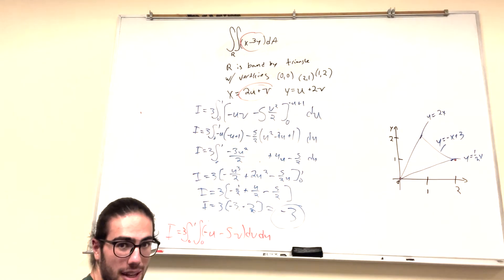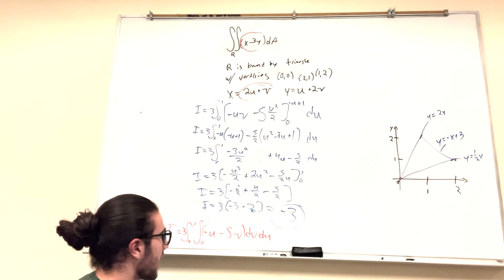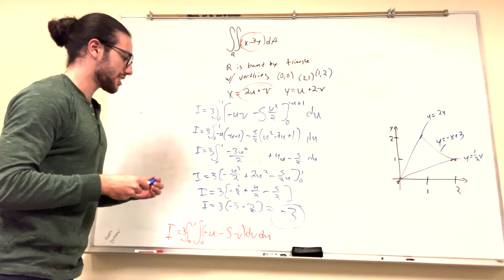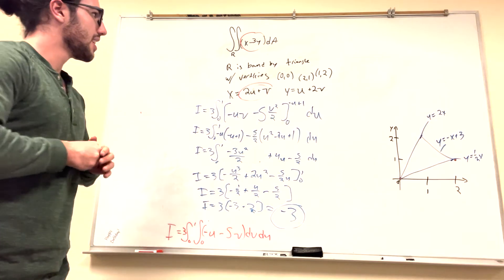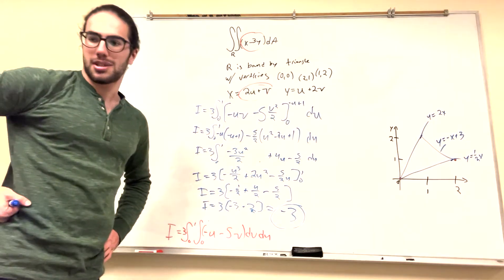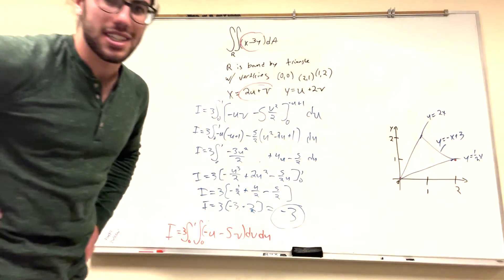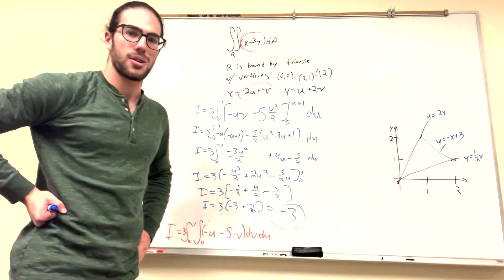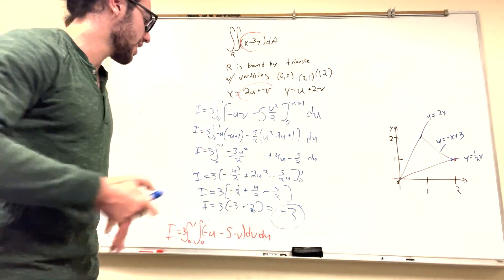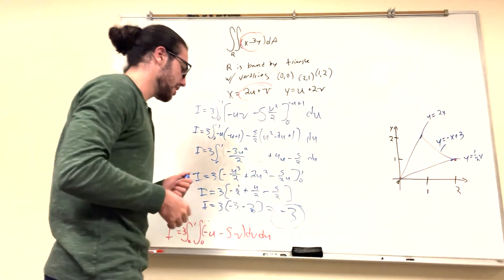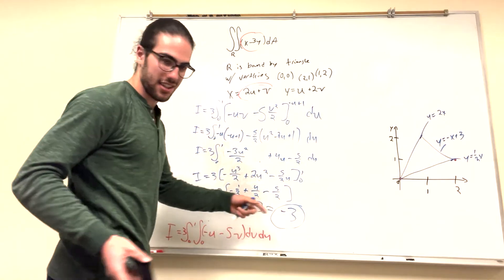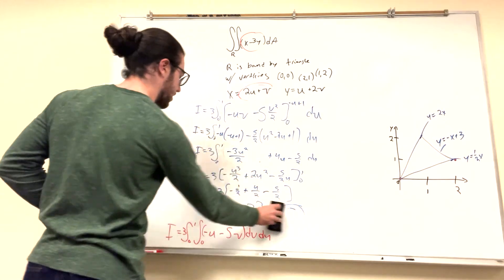I was worried I messed up but I didn't — negative 3 is our answer. That's how you do it the correct way using the u and v change of variables.